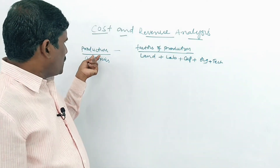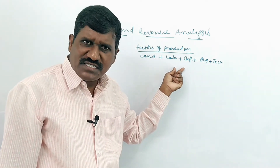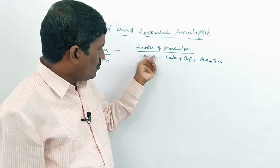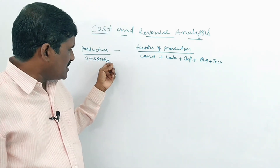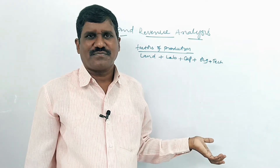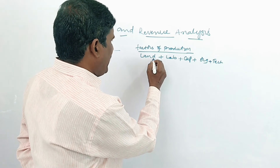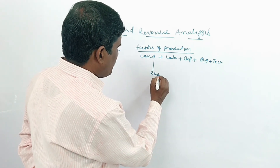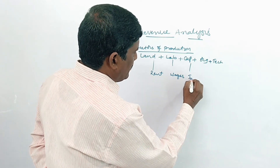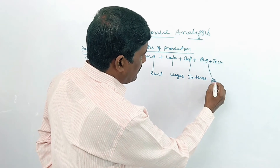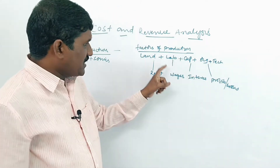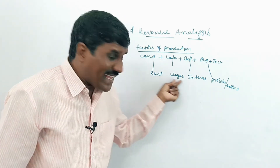Suppose if you want to produce goods — can we use these factors of production free of cost? No. When we use land, we have to pay rent. For labor, wages. For capital, interest. For organization, profits — and sometimes we may get losses also. When we use the factors of production, we have to pay the factor pricing.